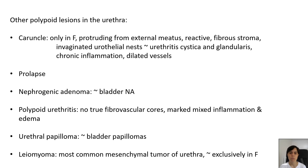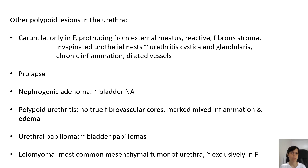Polypoid urethritis importantly does not show true fibrovascular cores, and it usually shows marked mixed inflammation — acute and chronic — and prominent edema. Urethral papillomas, which resemble bladder papillomas, are also to be considered in the differential diagnosis, as well as tumors of other natures, for example mesenchymal tumors. The most common mesenchymal tumor of the urethra is the leiomyoma, which almost exclusively occurs in women.